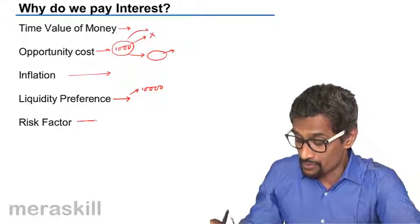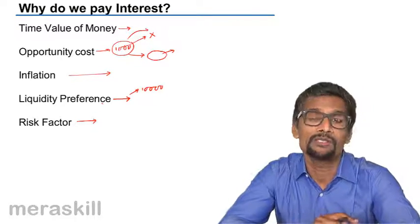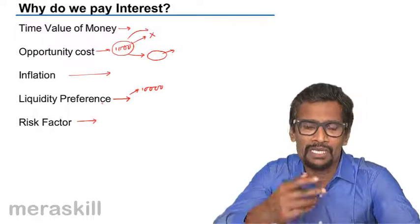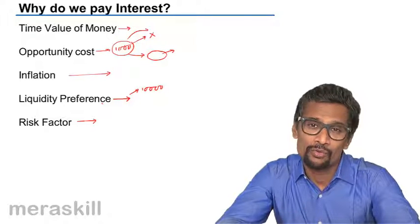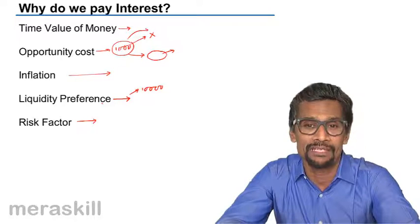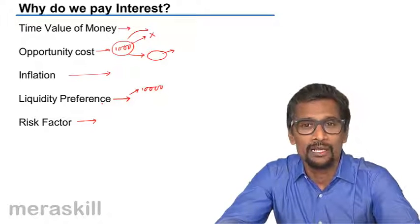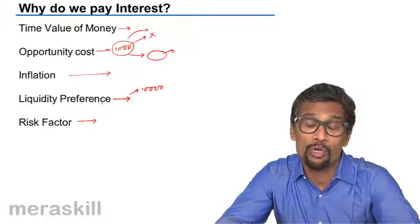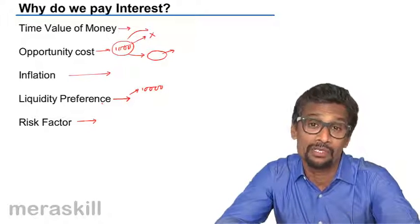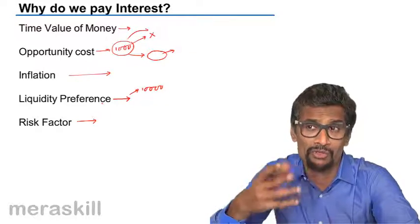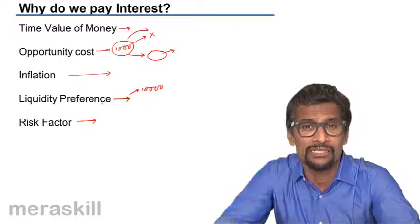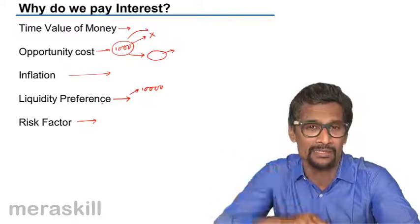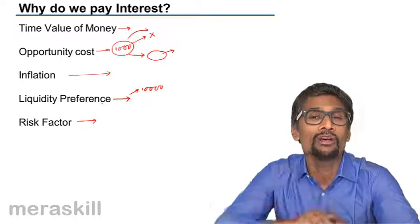And there is a risk factor also. Suppose the person is not able to pay the money on time, then there is a risk factor. So for that, there has to be a demotivator for the other person not to default. At the same time, you are also facing a risk factor because there could be a contingency tomorrow and you may need the money very urgently, when you've actually given it out to somebody else as a loan. So that person has to pay that amount to cover up your risk.